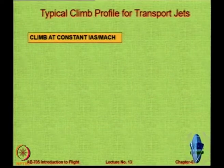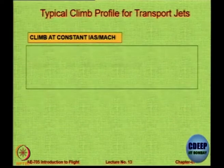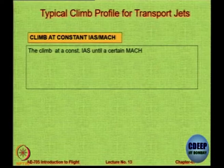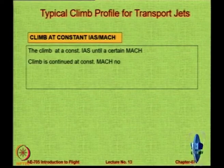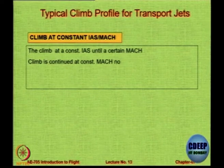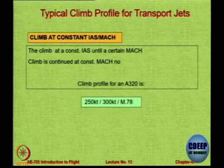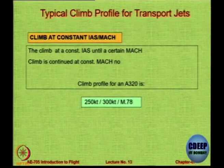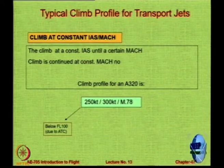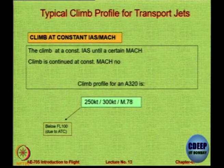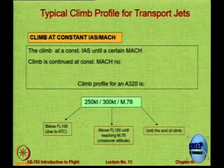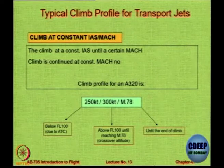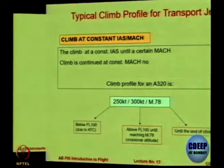For an Airbus A320, the climb profile is: 250 knots below flight level 100, because of air traffic control restrictions. Above flight level 100, the aircraft is allowed to fly at 300 knots until the Mach number reading reaches 0.78. When M equals 0.78 is reached, the pilot maintains that Mach number until reaching the cruising altitude. So: first part is constant IAS climb, second part is a constant Mach number climb where true airspeed reduces. This is due to changes in temperature and the effect on thrust.